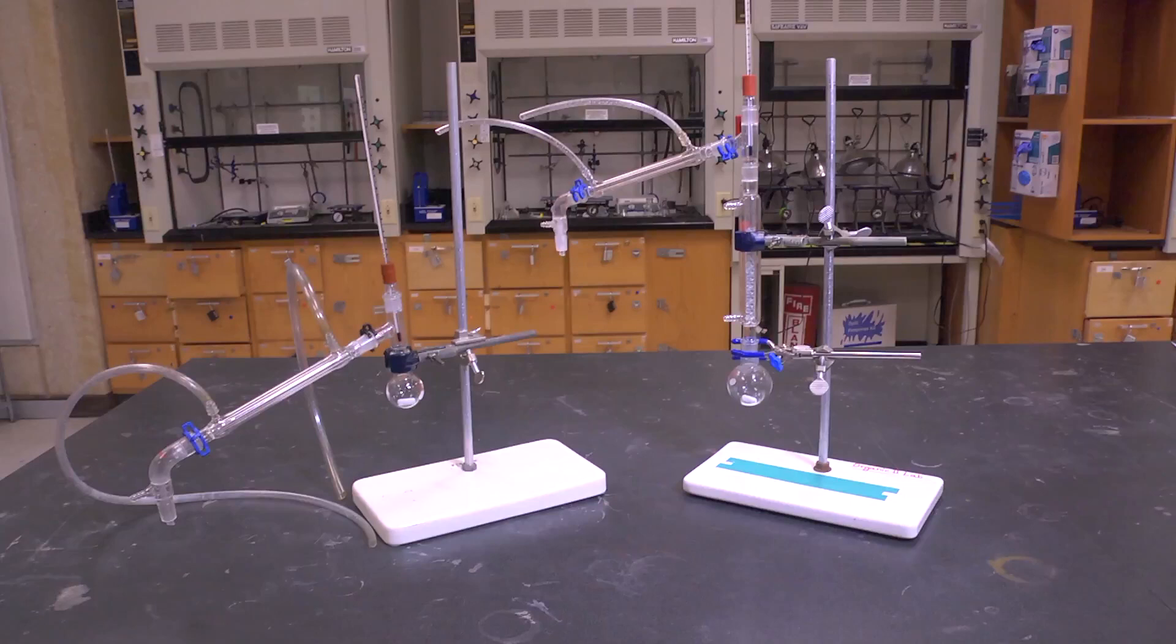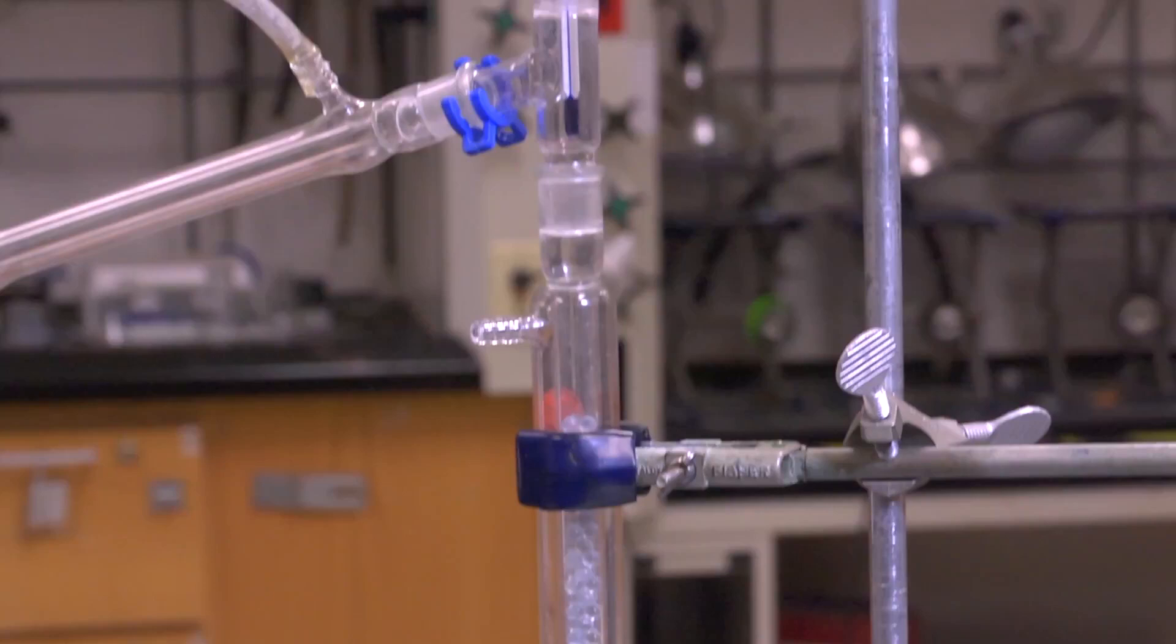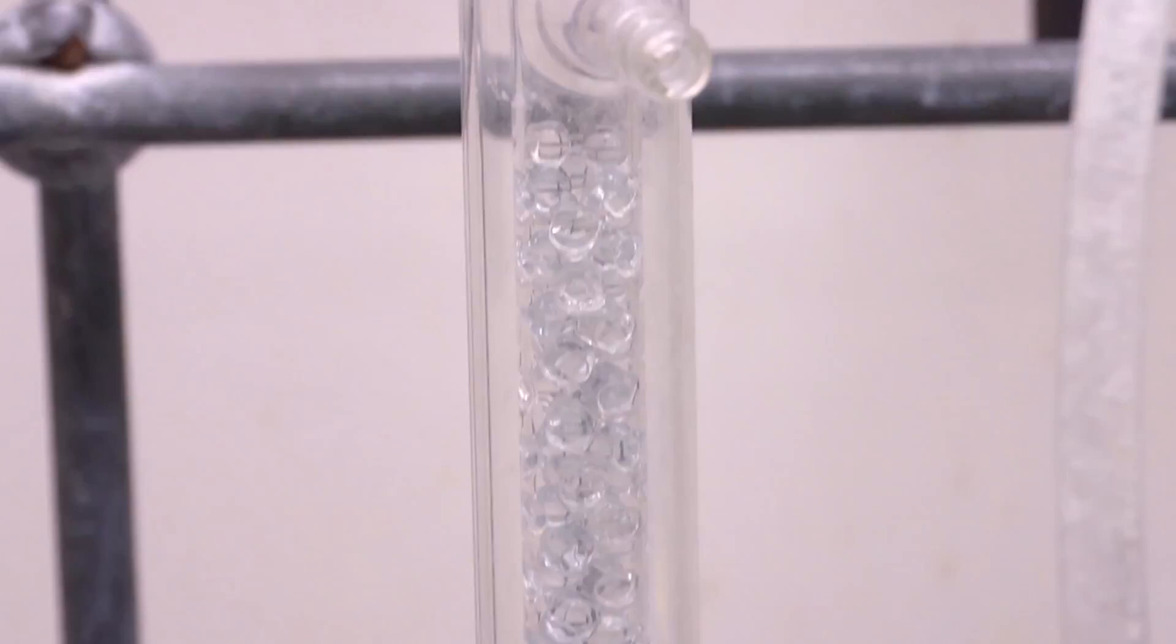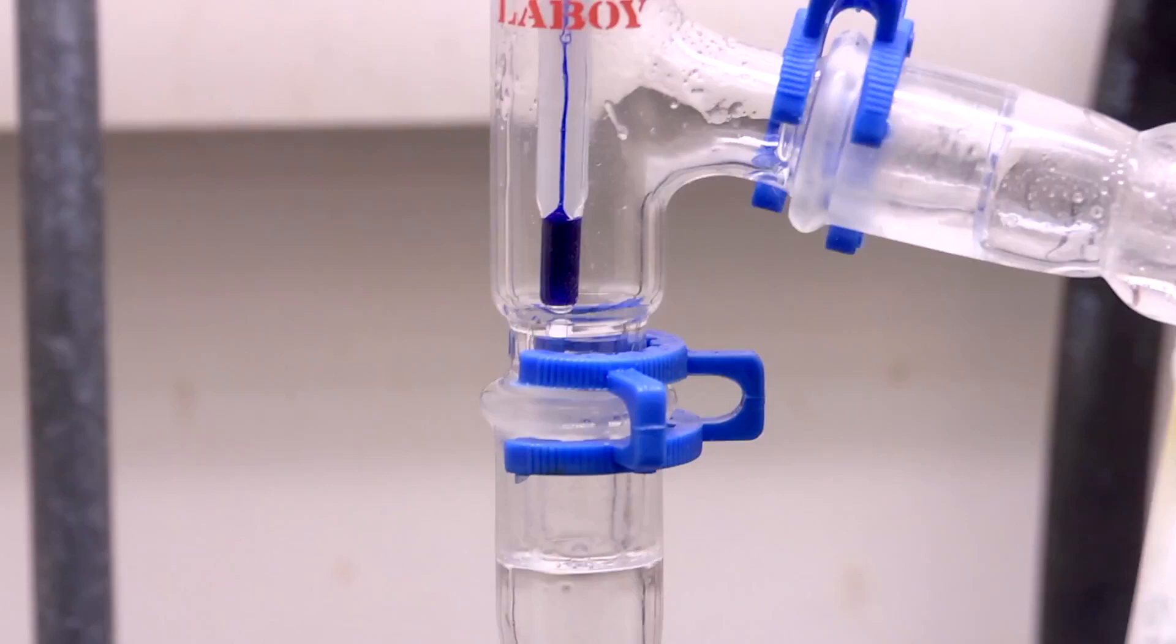Fractional distillation incorporates the use of glass beads and can be thought of as many separate mini-distillations that increase the purity of the distillate. For fractional distillation, the liquids do not need to have large boiling point differences. As the temperature rises and the mixture starts to boil, condensation will collect on the beads and fall back down.